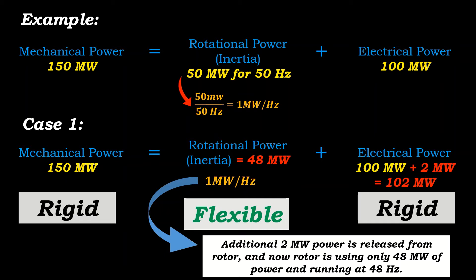So here the additional 2 megawatts will be released by rotor, and now the rotor have 48 megawatts of energy left. And by the relationship of 1 megawatt per hertz, we know that it will run at a frequency of 48 hertz.